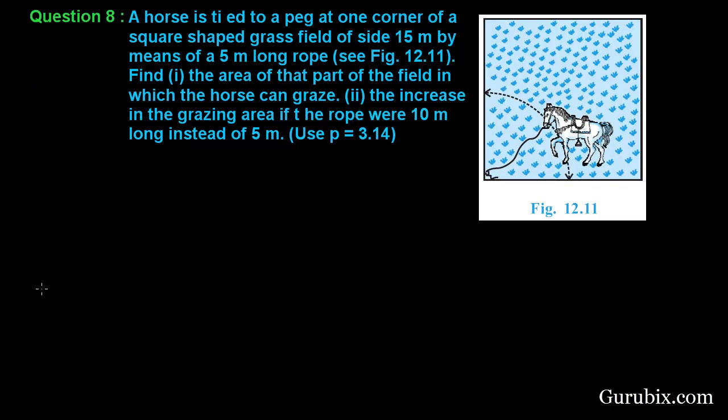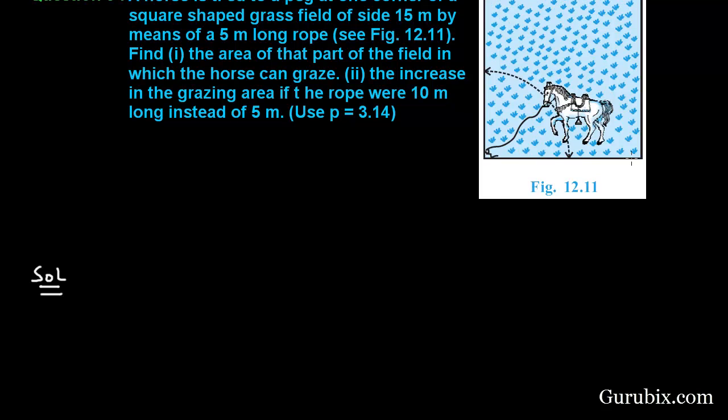Let us solve the question for part 1. In part 1, theta equals 90 degrees because the grass field is in the shape of a square and all angles of a square are 90 degrees, and the radius in this case is 5 meter.